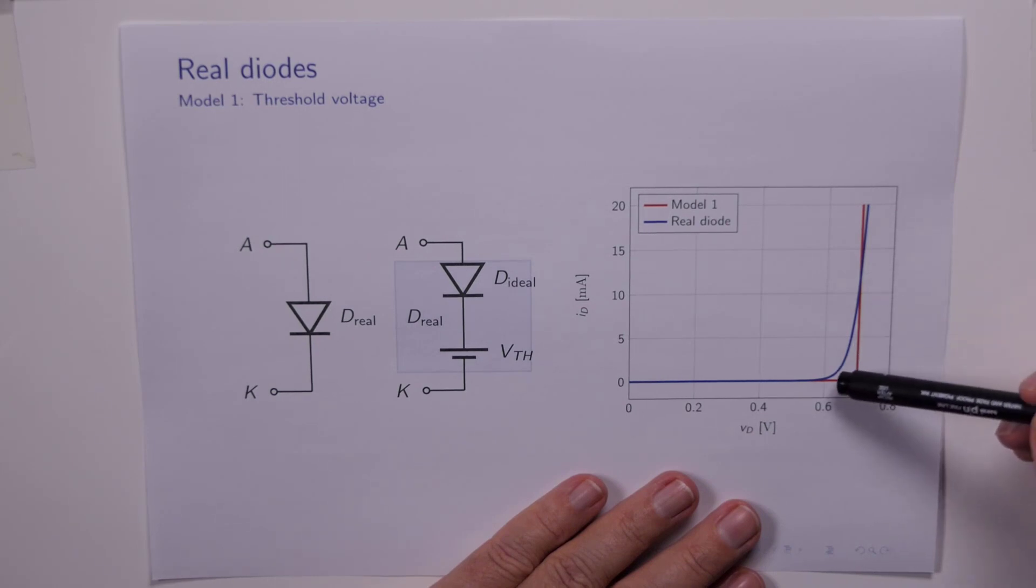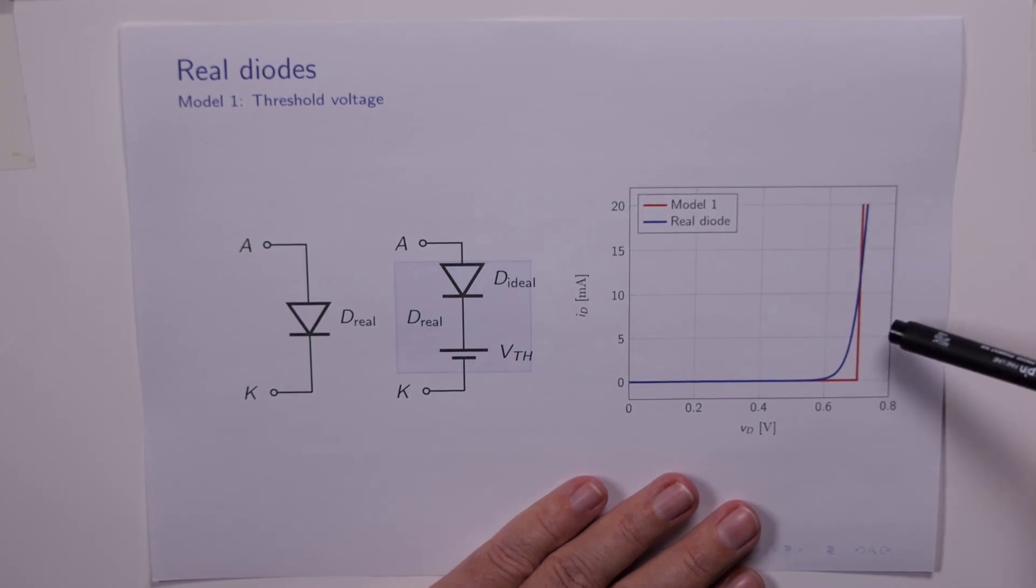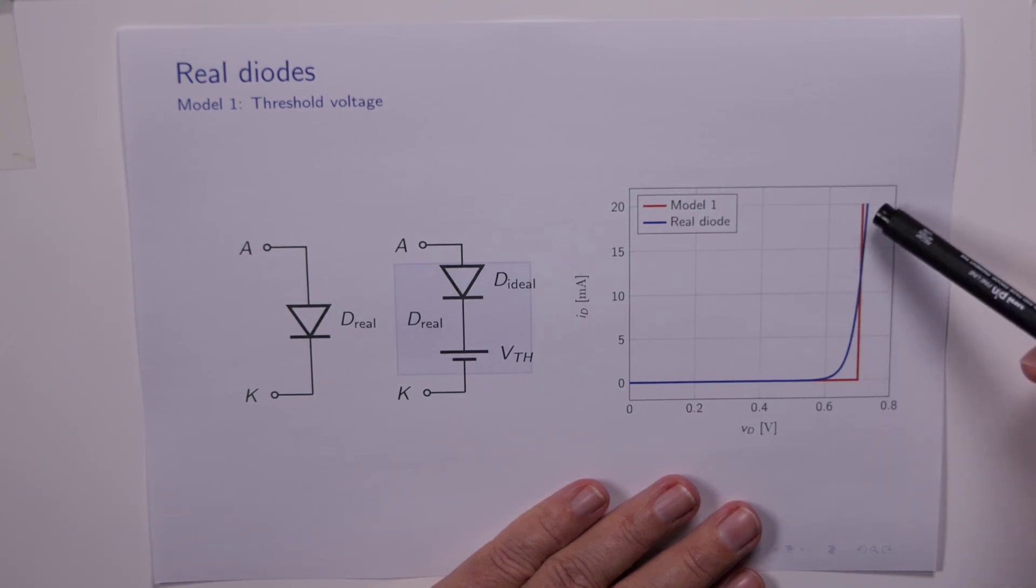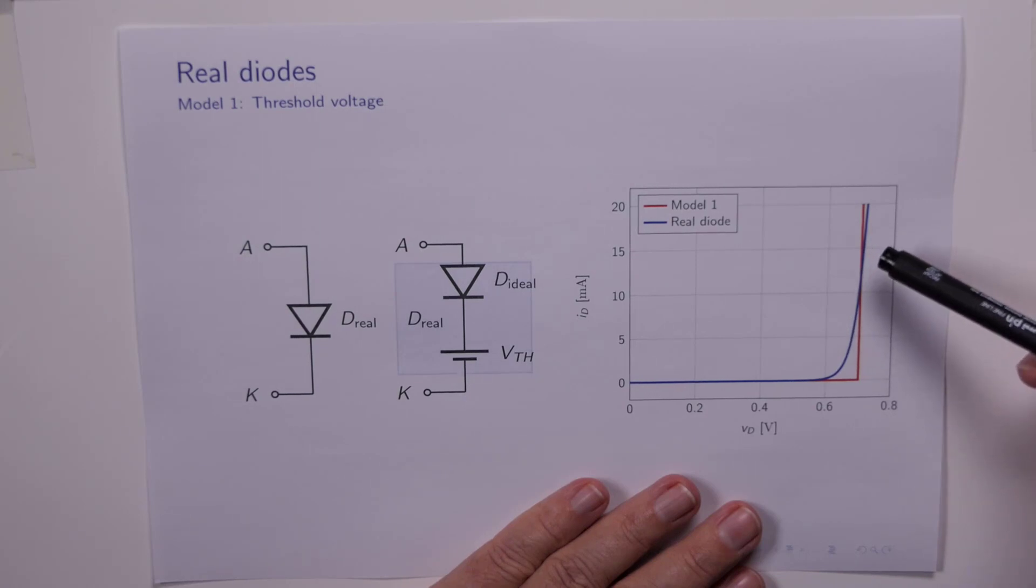The main drawback with this circuit, of course, is that it doesn't really account for the finite conductance when the diode is on. Model 1 has infinite conductance when the diode is on. And in reality, the real diode doesn't have infinite conductance. And we can see that because the blue curve is starting to diverge from the red curve at the top here. So the next thing to do then would be to augment this model with something that would account for the non-infinite slope of the diode. And the obvious thing to do there is to include a resistor in series with this ideal diode in the threshold voltage so that the voltage across the resistor increased as the current through the diode increased. And that will give us some slope.